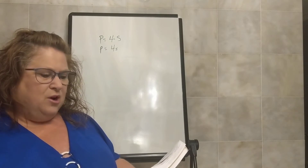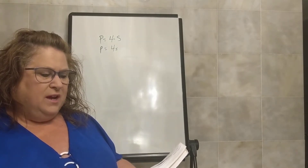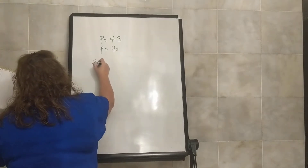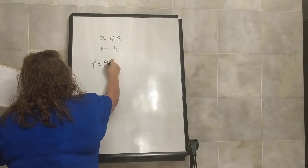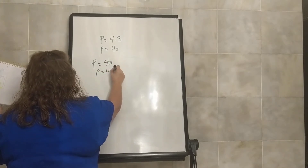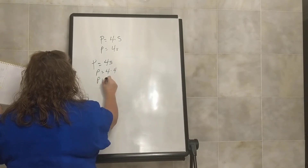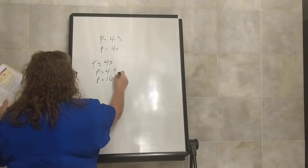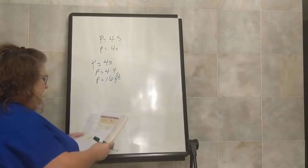Looking at page 253, class practice number 1A: solve these story problems. Caleb built a square doghouse for Spot. Each side is four feet. What is the perimeter of the doghouse? So it's going to be perimeter equals 4S, perimeter equals 4 times 4, perimeter equals 16 feet. That is our answer.